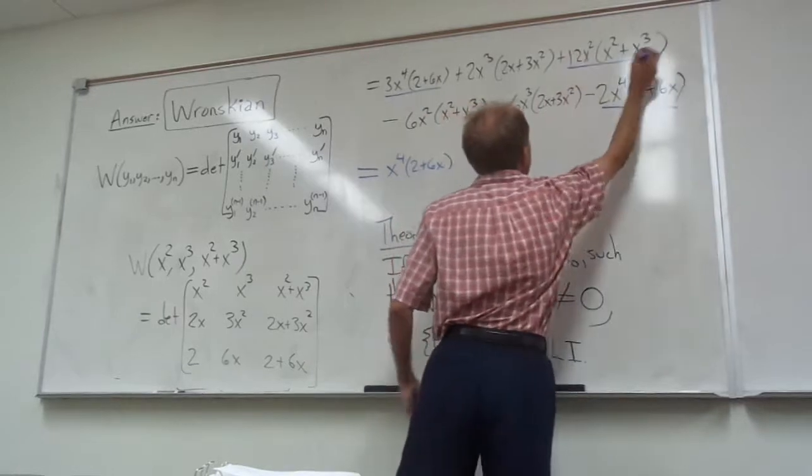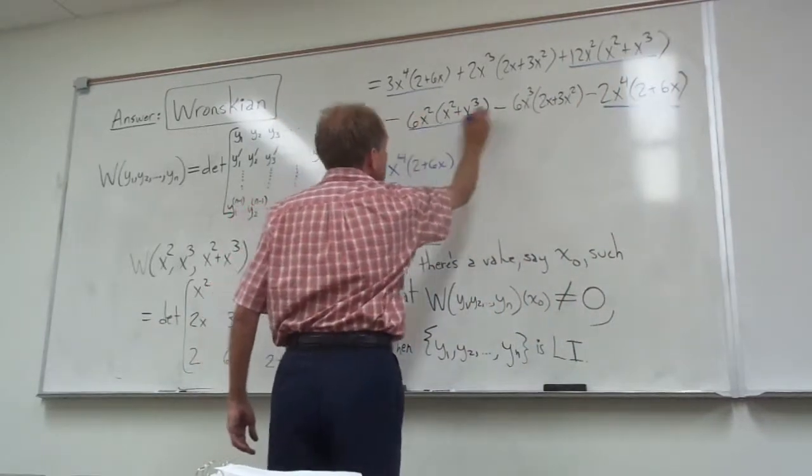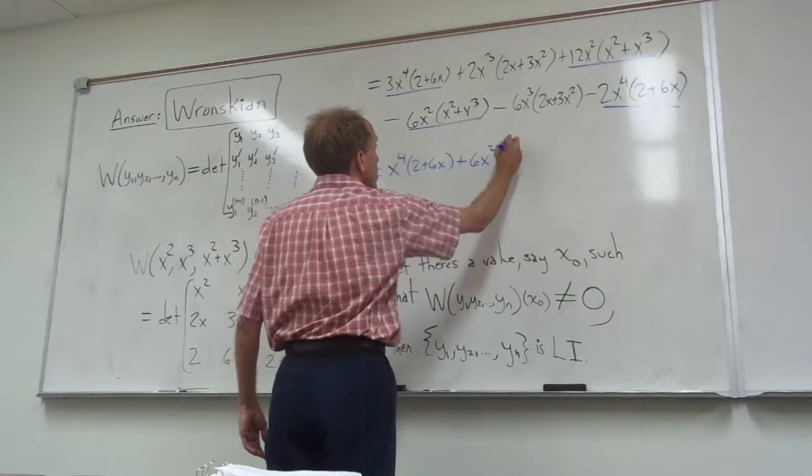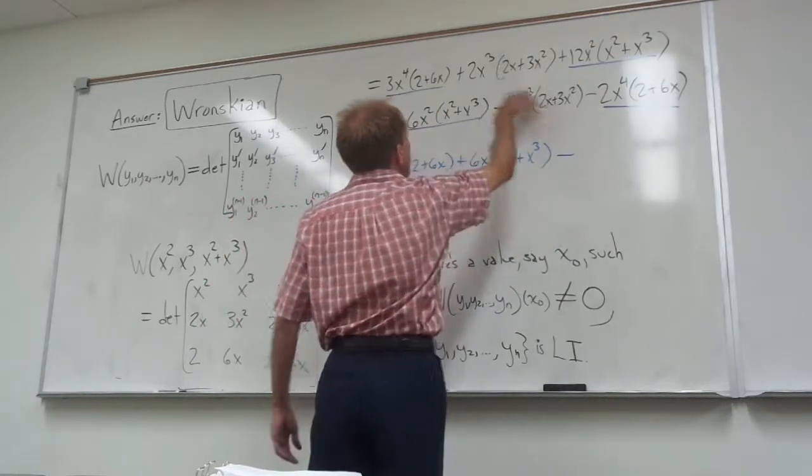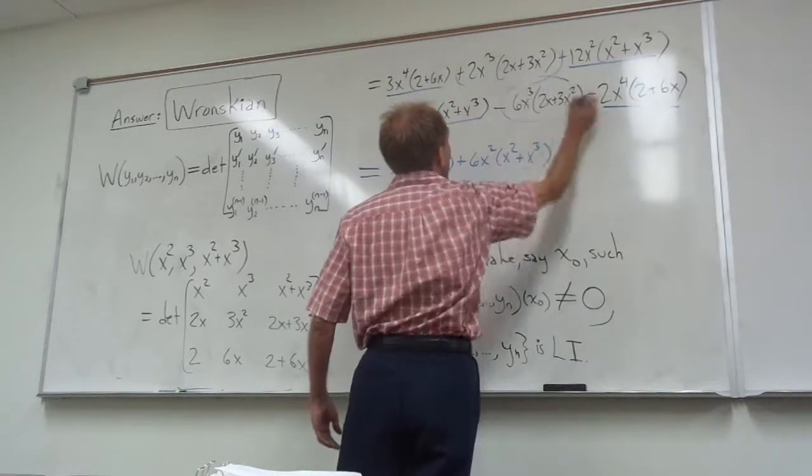we have a 12x squared times x squared plus x cubed, and a 6x squared times x squared plus x cubed. So that can be simplified. And then finally, these two middle terms here can be also simplified,